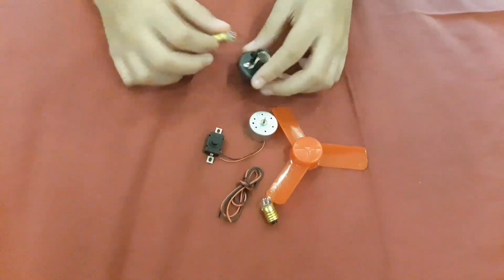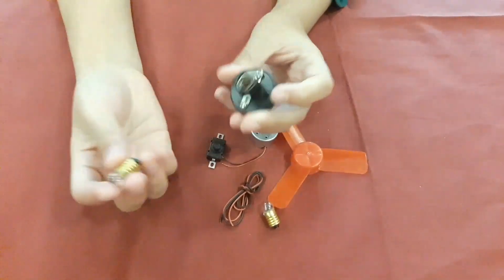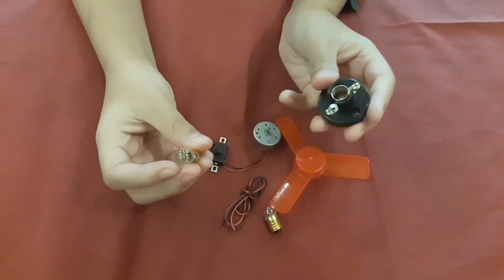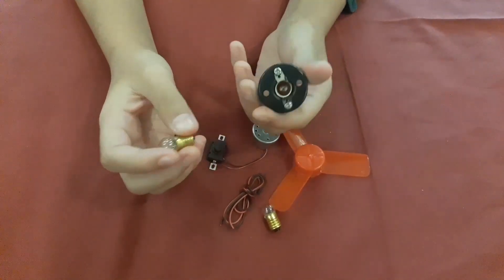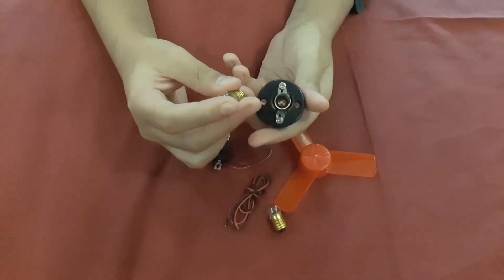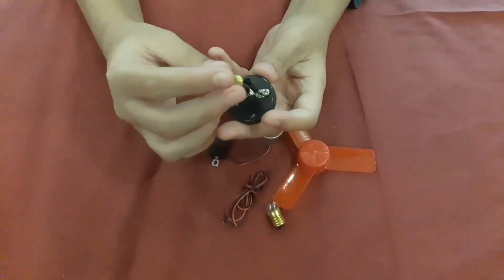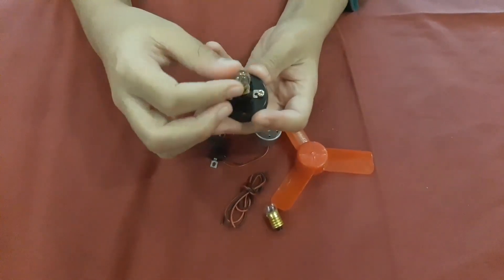And while you are doing that, take one light bulb, the other is an extra, and take this platform or the socket for the light bulb and start screwing it in.